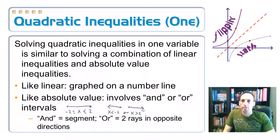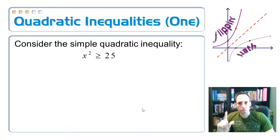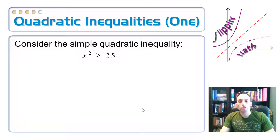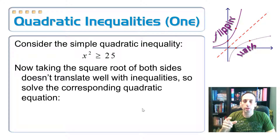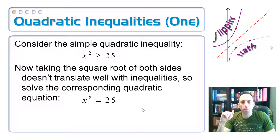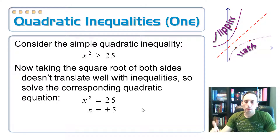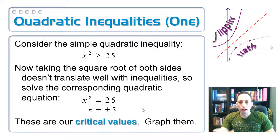Consider this simple quadratic inequality: x² ≥ 25. If it were an equation, we'd just take the square root of both sides. But with an inequality sign, that doesn't quite work. So instead, let's ignore the inequality sign, treat it as x² = 25, solve it, and we get two answers: x = 5 and x = −5. These are not necessarily our answers — they're called the critical values.